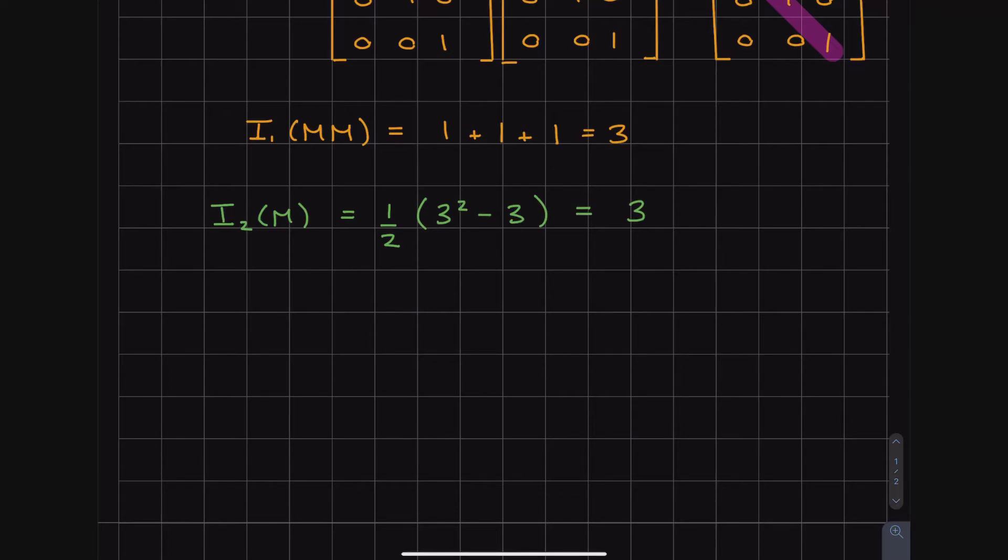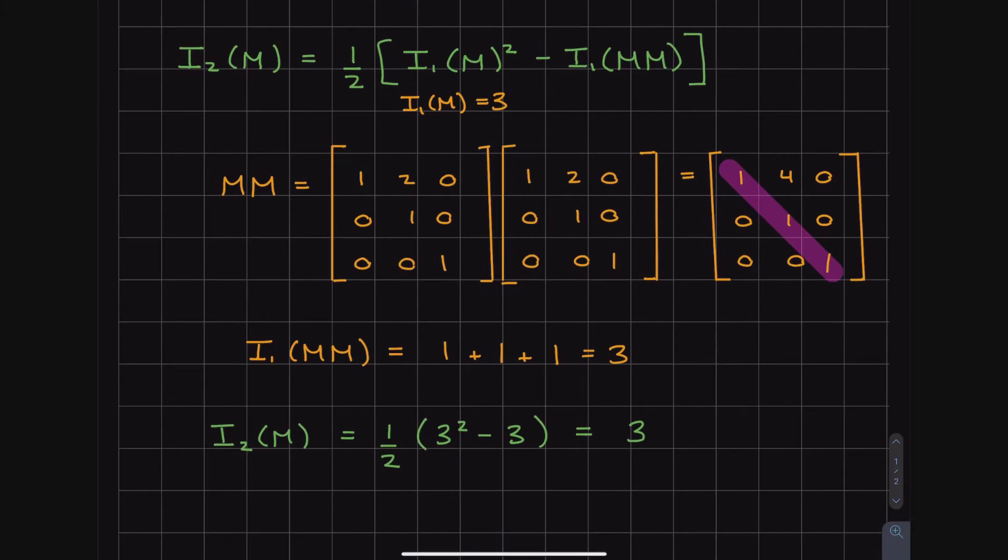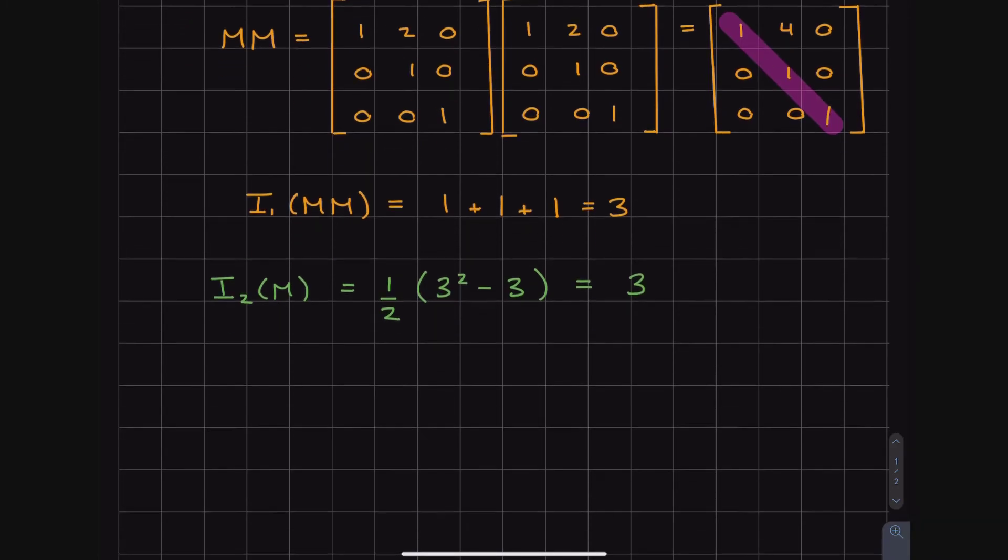So we substitute everything into here, throw it in your calculator if you want, or you can do the mental math. From my experience, the mental math does not end well. But you get invariant 2 of M is actually equal to 3.